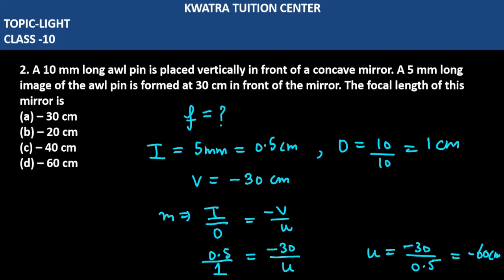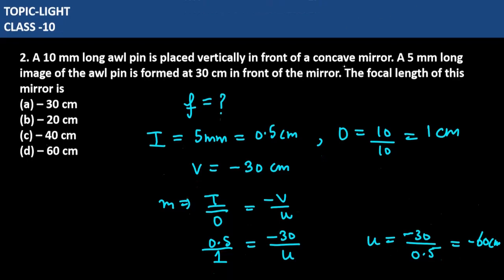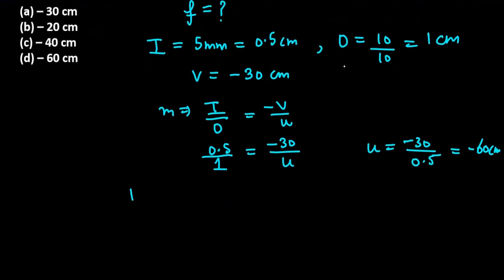Now in this case, we have to find the focal length. How do you find the focal length? You can find it with the help of lens formula, which is 1 over F equals 1 over U plus 1 over V. We have all the values: U is minus 60, V is minus 30.